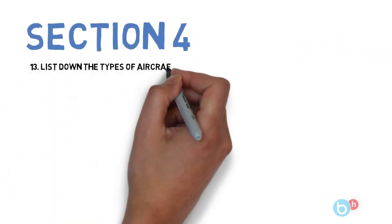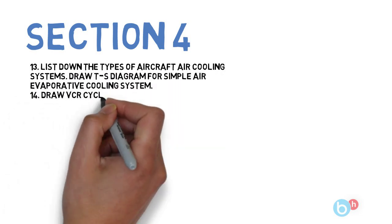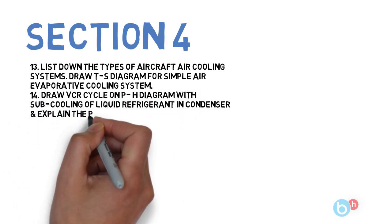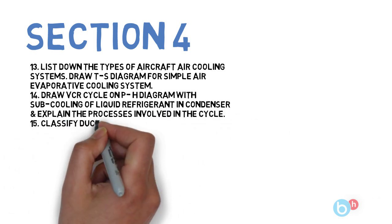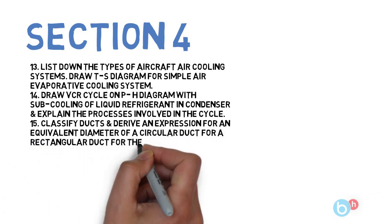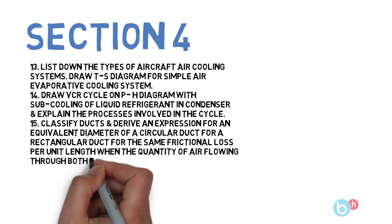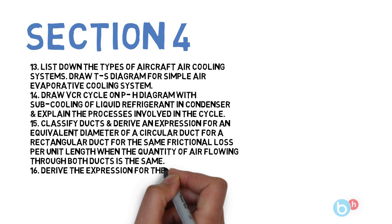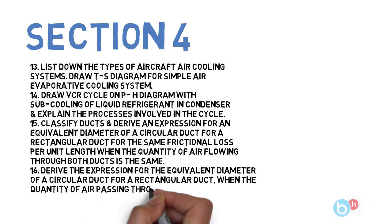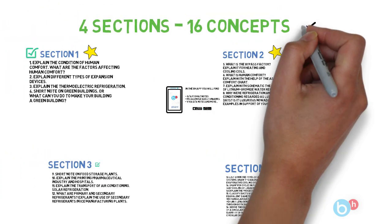So these 4 for section 3. Let's go to section 4, where the first is: draw VCR cycle for pH diagram with sub-cooling of liquid refrigerant in condenser and explain the process involved in the cycle. Next is: classify ducts and derive an expression for an equivalent diameter of a circular duct for a rectangular duct for the same frictional loss per unit length where the quality of air flowing through both the ducts is same. And the last one is: derive the expression of equivalent meter of circular duct for a rectangular duct when the quantity of air passing through the rectangular and the circular duct is the same.